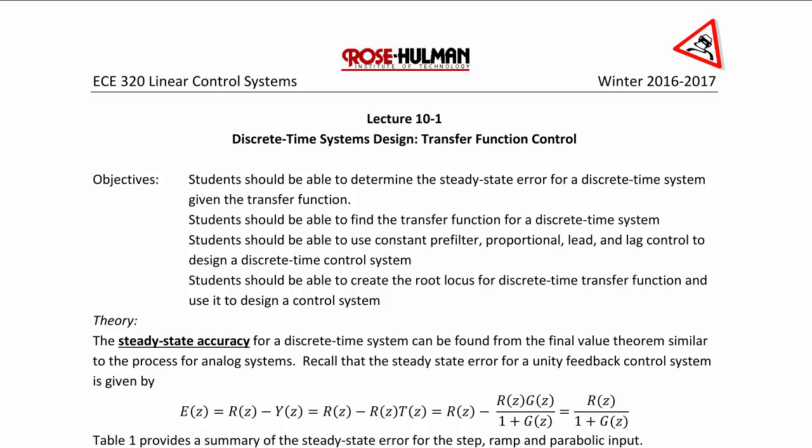The steady state accuracy for a discrete time system can be found from the final value theorem, similar to the process for analog or continuous time systems. Recall that the steady state error for a unity feedback control system is R(Z) minus Y(Z), which equals R(Z) over 1 plus G(Z).